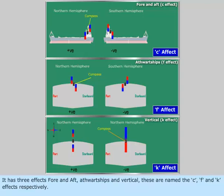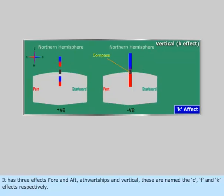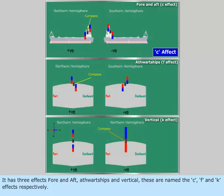It has three effects: fore and aft, athwartships, and vertical. These are named the C, F, and K effects, respectively.